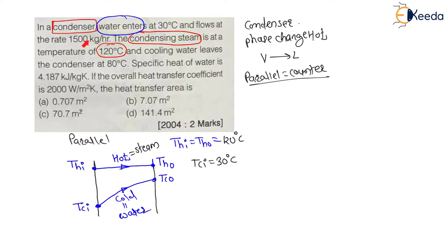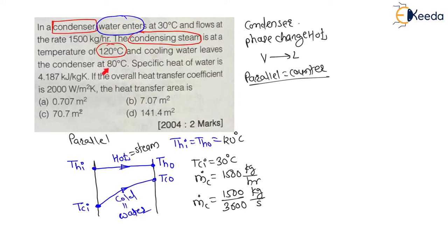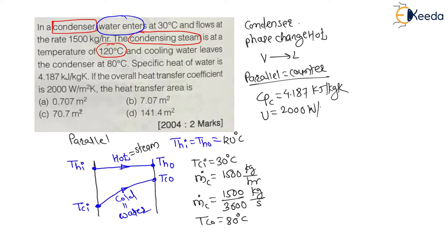The mass flow rate of water (cold fluid) is 1500 kg per hour, which we convert to kg per second: 1500 divided by 3600 kg/s. Cooling water leaves the condenser at 80°C, so T_CO equals 80°C. The specific heat of water is 4.187 kJ per kg·K. The overall heat transfer coefficient U is given as 2000 W per m² per K.